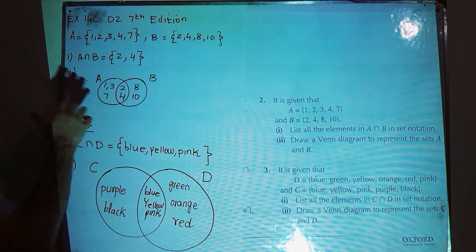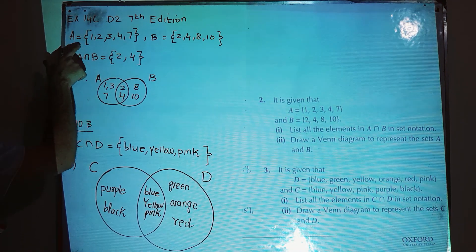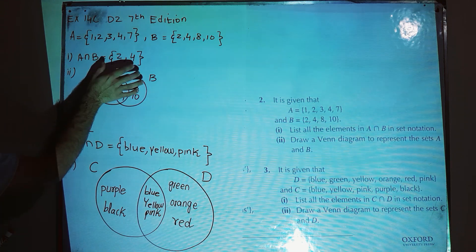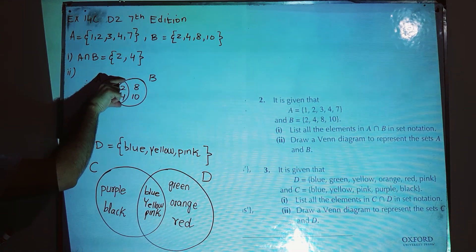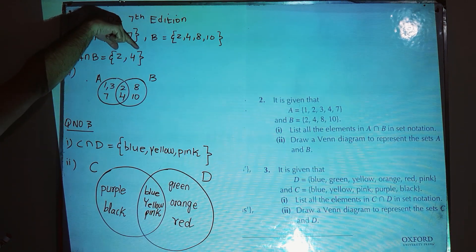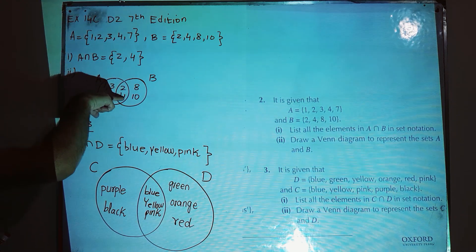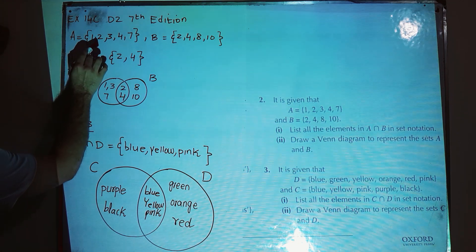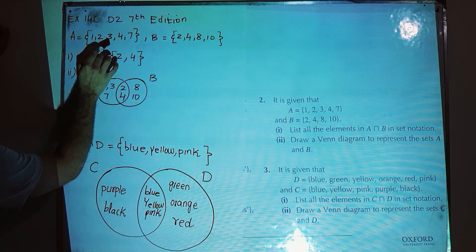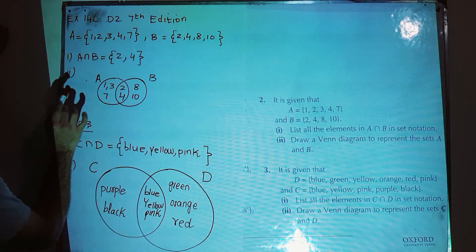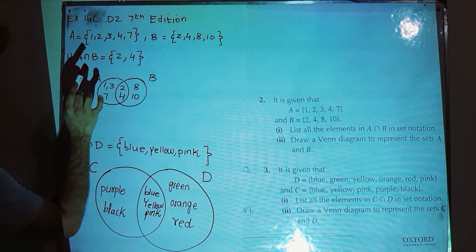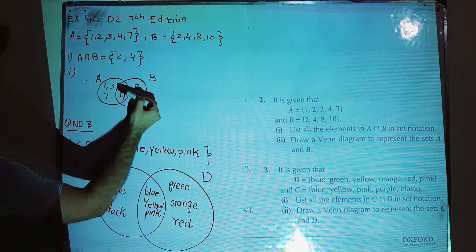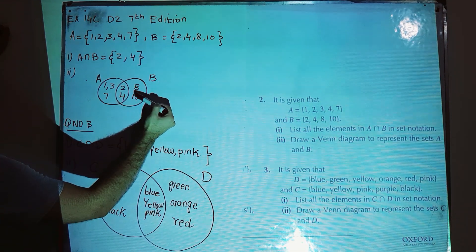For part two, draw two circles — one for A, one for B — and they must be overlapping, because the overlapping part represents the intersection. In this overlapping part write the two elements 2 and 4. From A, the rest of the elements 1, 3, and 7 are written in the non-overlapping section of A. From B, the common elements 2 and 4 are in the overlap, while the rest — 8 and 10 — are written in B's exclusive section.